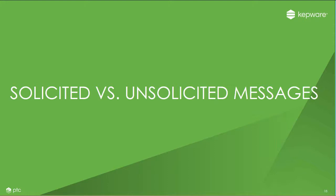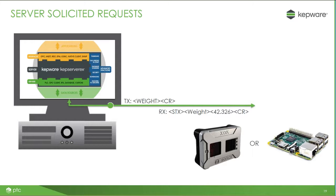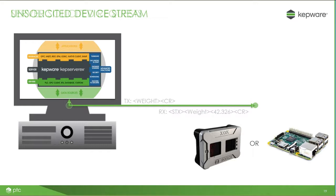Now let's look at the driver itself, starting with solicited versus unsolicited messaging. One traditional way to interact with a device is to solicit a message or request. KepServer builds a transmit message and sends it over the wire to a particular device, which then interprets the message and responds according to its protocol document. In the example shown, KepServer is sending a transmit message of 'weight' to the device. The device takes that weight command, responds with that same request message followed by the actual weight value. KepServer then takes that message, strips out the non-meaningful ASCII characters, and selects the actual data that pertains to a particular tag value.